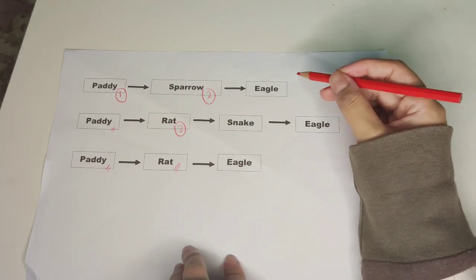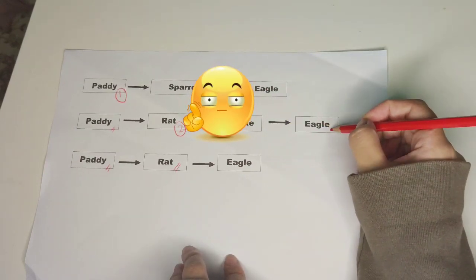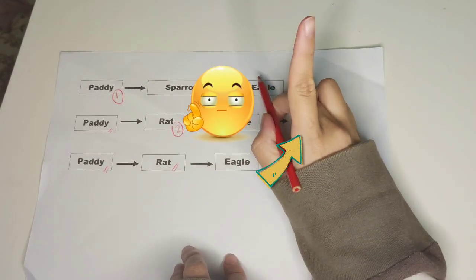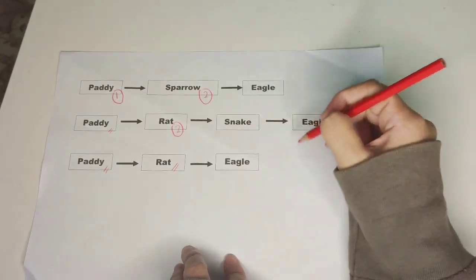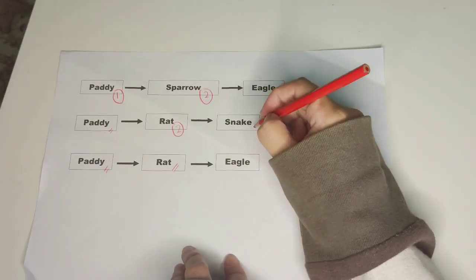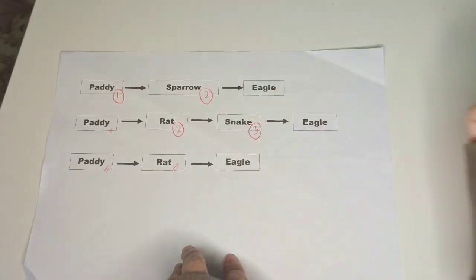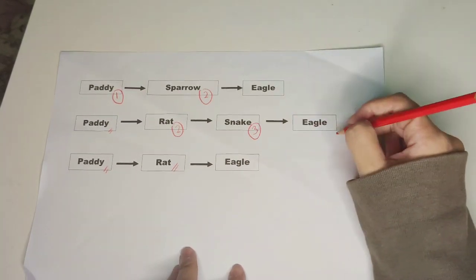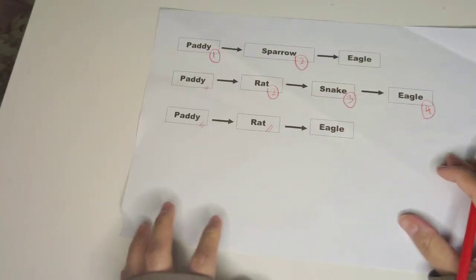Next, eagle cannot be number three because there is an eagle at the number four position. Only snake is given number three. And finally, eagle will be given number four.